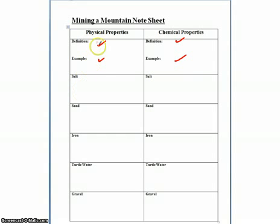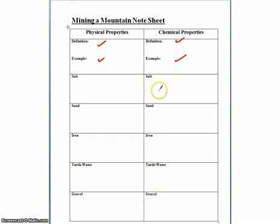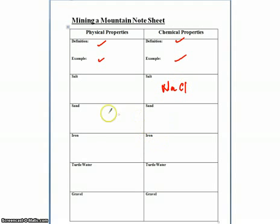Physical characteristics of salt would be things like it was white and it was cubic. Chemical properties: it is Na — sodium — and Cl, sodium chloride.